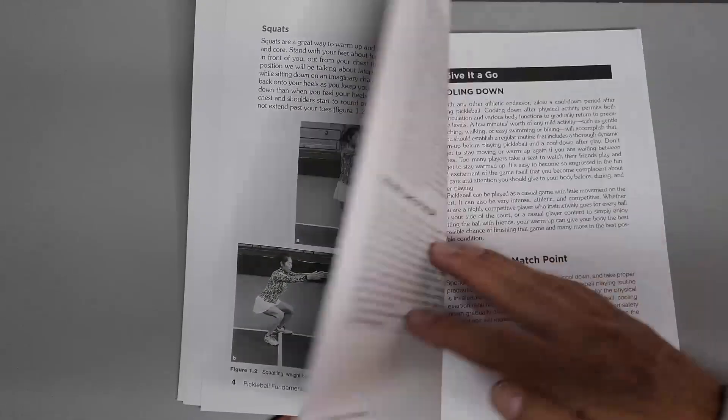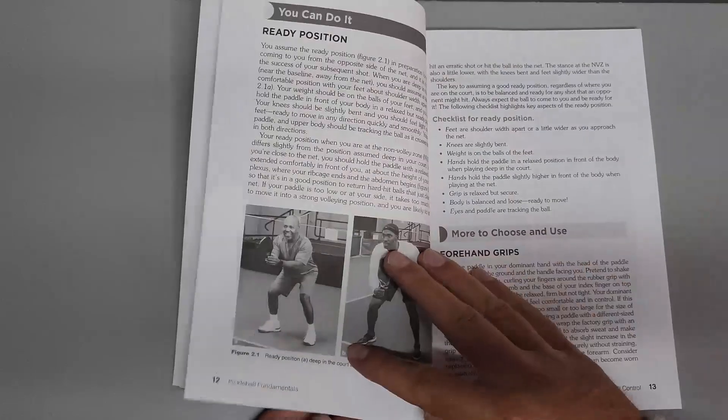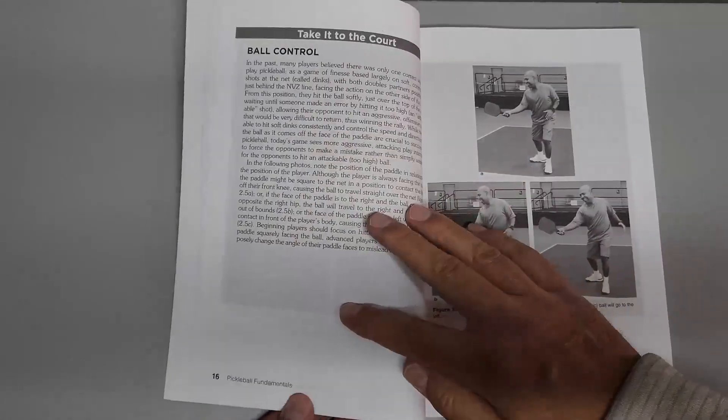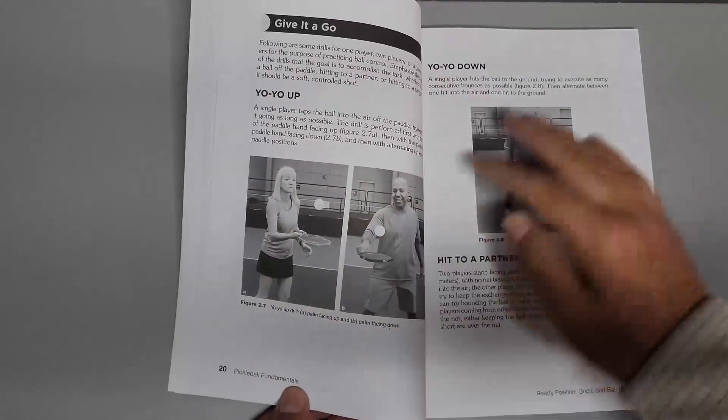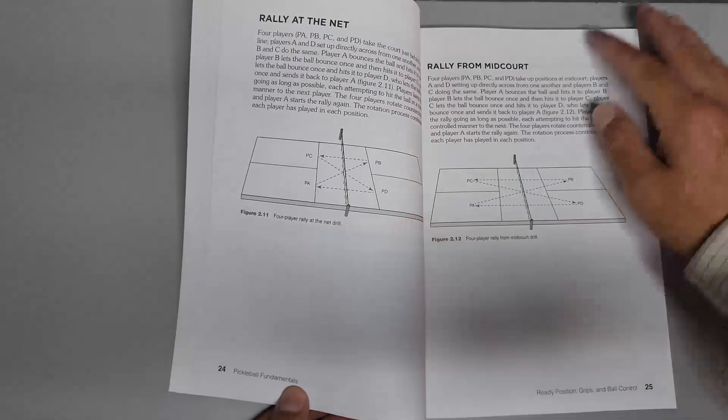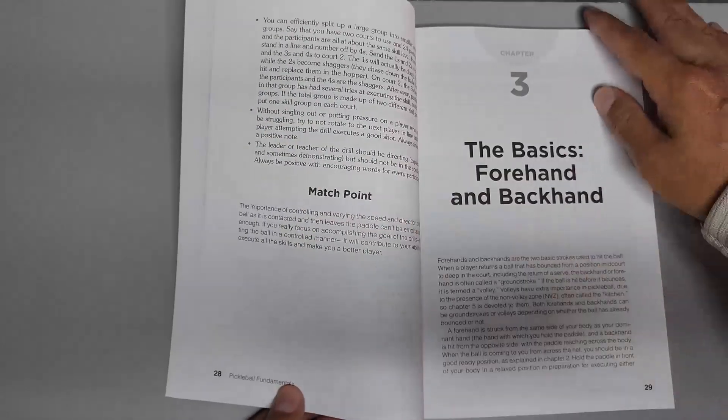This book is laid out in an easy-to-follow format that helps you progress through skill development. The You Can Do It section of each chapter provides a clear explanation of how to perform an essential skill or tactic.